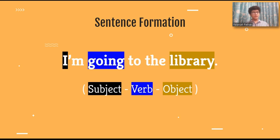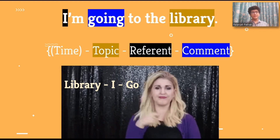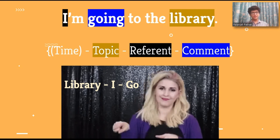That was about words and short phrases. Now, moving on to sentences. A simple sentence has a subject, object, and a verb. The sequence of which differs from language to language. The sequence in English is subject, verb, object. So in this example, 'I am going to the library' — I is the subject, going is the verb, and library is the object. It's a little different in sign language. While doing the gestures, the object in the sentence comes first, followed by the subject and at last the verb.